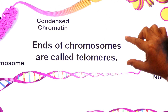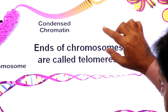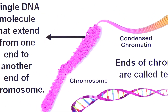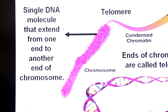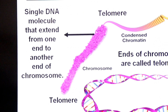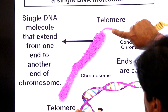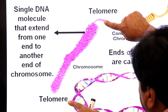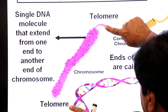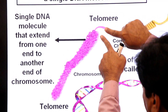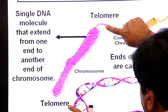The ends of chromosomes are called telomeres. Remember, one chromosome is one molecule of DNA that extends from one telomere to another telomere.